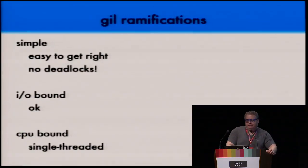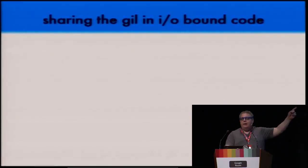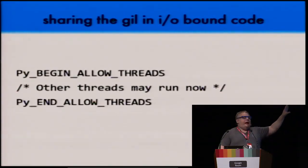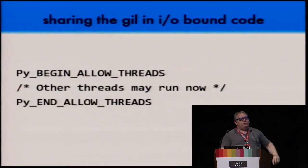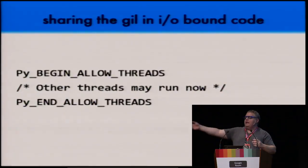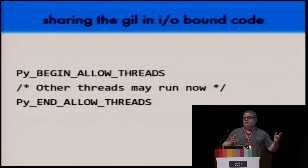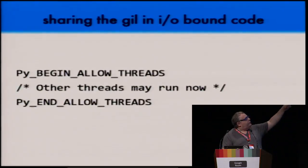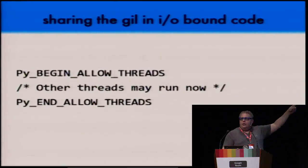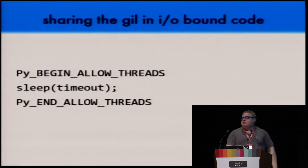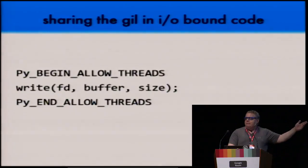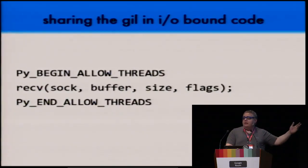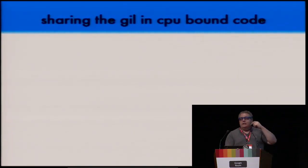For IO-bound code with multiple threads all blocking on IO, things work magically — the program runs as fast as it can. For CPU-bound code, your program is effectively single-threaded because only one thread can hold the GIL at a time. The macros Py_BEGIN_ALLOW_THREADS and Py_END_ALLOW_THREADS let you drop the GIL when you're about to do something that doesn't need the interpreter — like sleeping, reading from a file, or waiting on a socket — then grab it again when you need it.